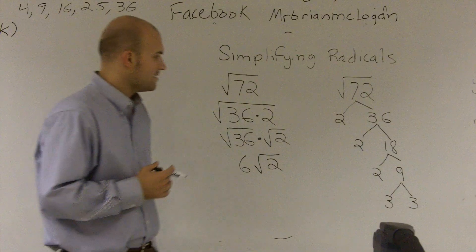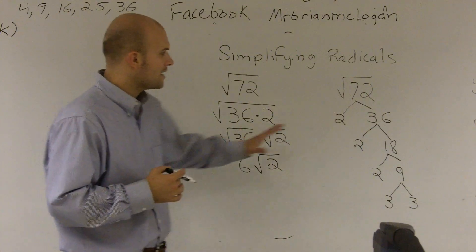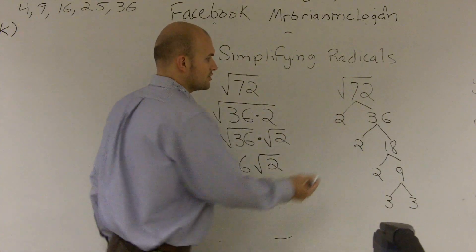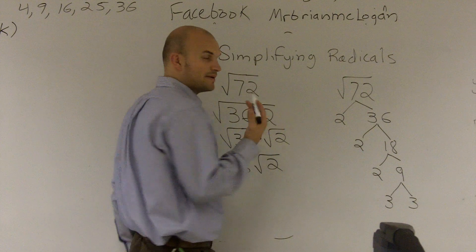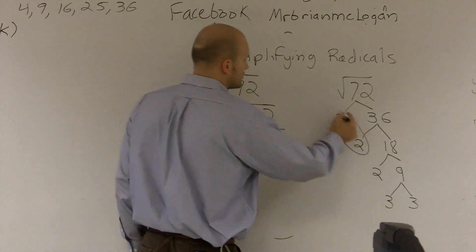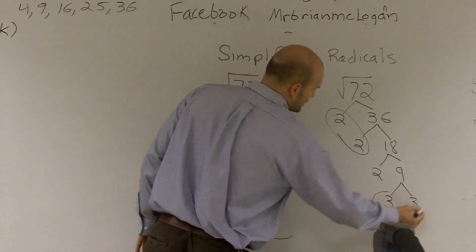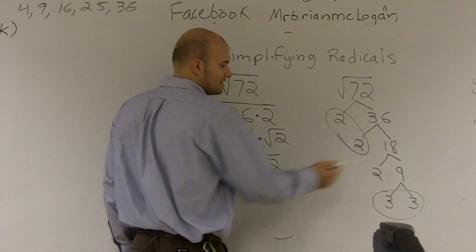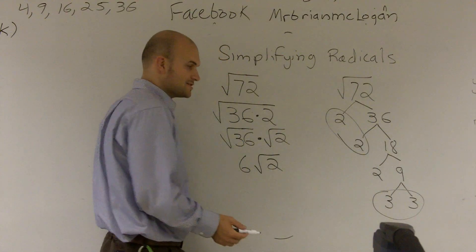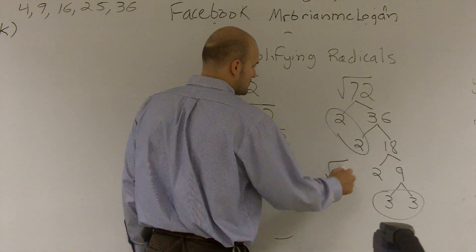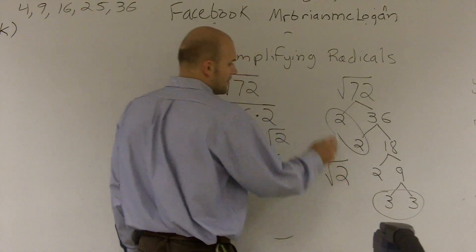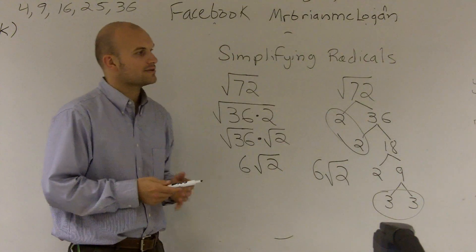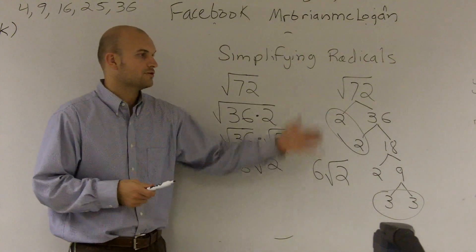Now, once I have my radical, what I can do is group these together. Because we're taking the square root, I want to see what I can group together. I can group a pair of 2's and a pair of 3's. The only thing left over is my 2, so I'm going to have a radical 2. And then 2 times 3, which gives me 6. So that's how you can simplify the radical by use of factoring.